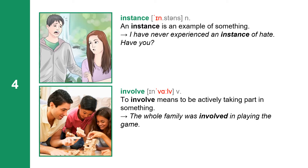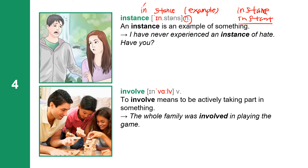Next word: instance. Instance has two syllables: I-N-S-T-A-N-C-E. Instance is a noun. It means an example. The adjective form is 'instant' — you may know instant ramen, meaning right away. Instance means an example of something. I have never experienced an instance of hate. Have you?